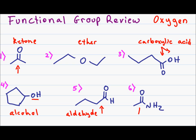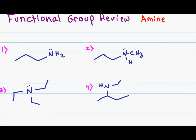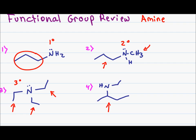In problem six, we have a carbonyl group attached to a nitrogen group, which means this has to be an amide. Recall that nitrogen order depends on how many R groups are attached to the nitrogen directly. In problem one, there is only one R group attached to nitrogen, making it a primary amine. In problem two, we have two R groups attached, making it a secondary amine. Problem three: three R groups attached, making this a tertiary amine. And problem four: two R groups attached, making it a secondary amine.